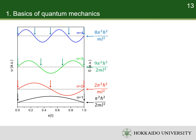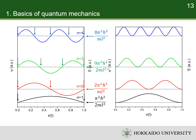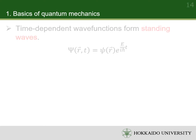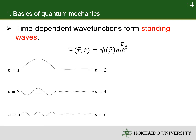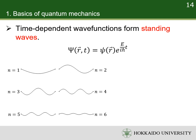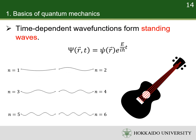Pay attention to the numbers and positions of the nodes. On the right, I show the probability densities. For example, in the ground state there is a high probability to find the particle in the middle, and it decreases toward the two boundaries. When the quantum number is two, the probability density has two maxima, while in the middle the probability to find the particle is zero. Considering the time evolution of the wave functions, time-dependent wave functions form standing waves. As the quantum number increases, the wavelength decreases while the energy and the frequency of oscillation increase. It is like the vibration of guitar strings.